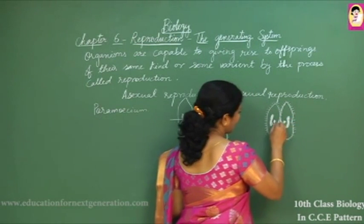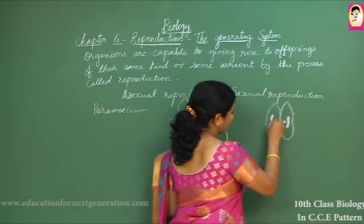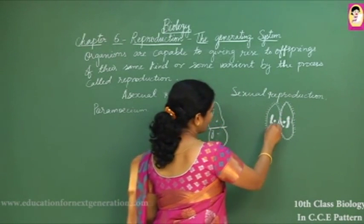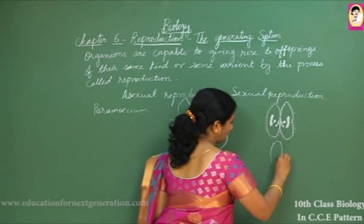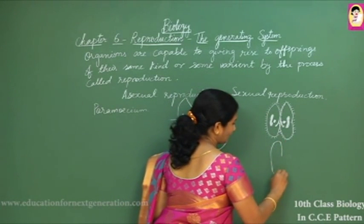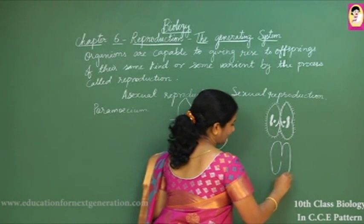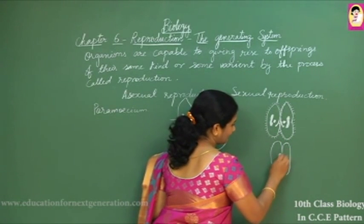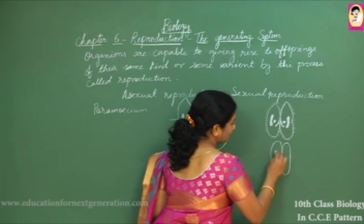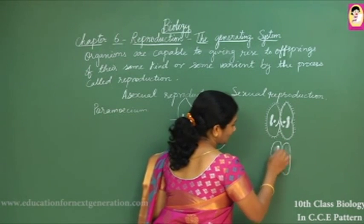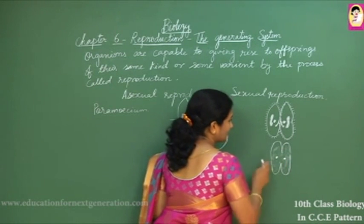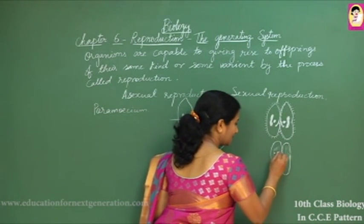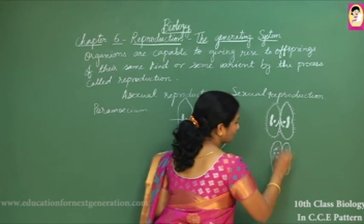Paramecium has one micronucleus and one macronucleus. The micronucleus takes part in sexual reproduction while the macronucleus degenerates because it has vegetative and metabolic functions. When two paramecia come close, there is a dissolution of the pellicle — the membranous sheet — and the cytoplasm joins, forming a cytoplasmic bridge.